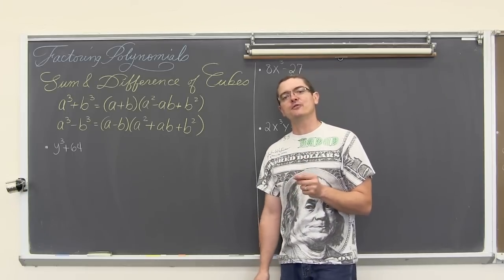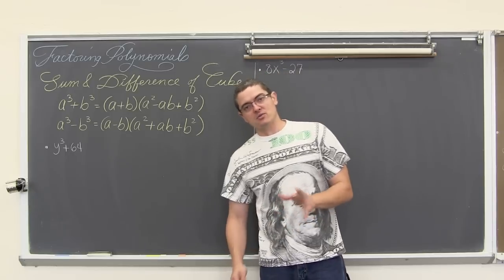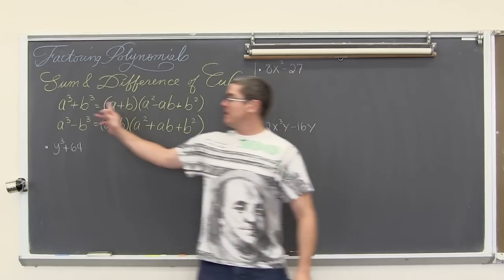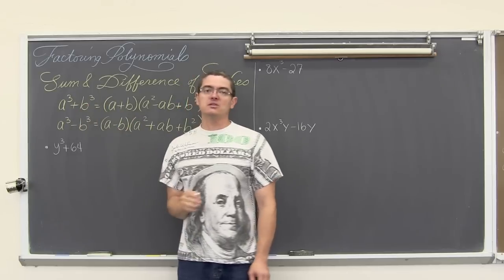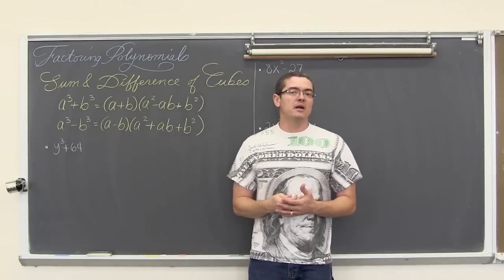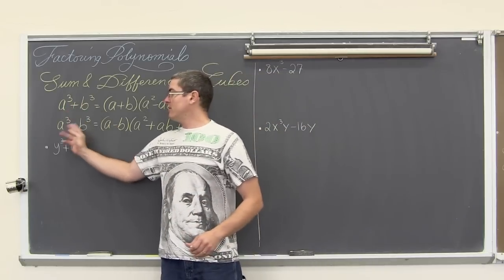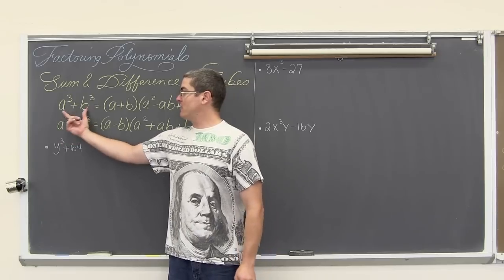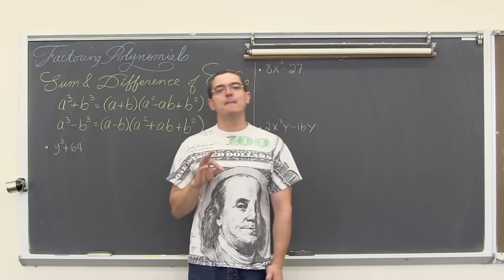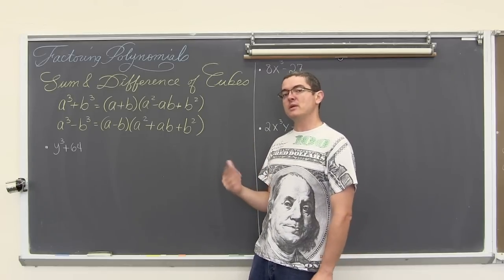We just got done looking at the difference of squares. There is no sum of squares pattern — there is only a difference of squares. When you are talking about a binomial where both terms are perfect squares, you can only have a minus sign in the middle. So we have a sum of cubes and a difference of cubes, and we are looking for each of those terms to be a perfect cube, so that we can take the cube root.